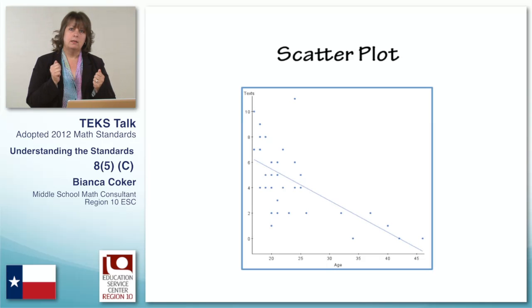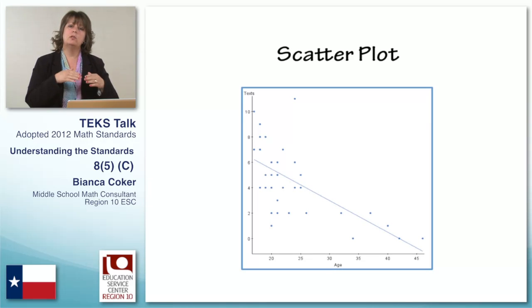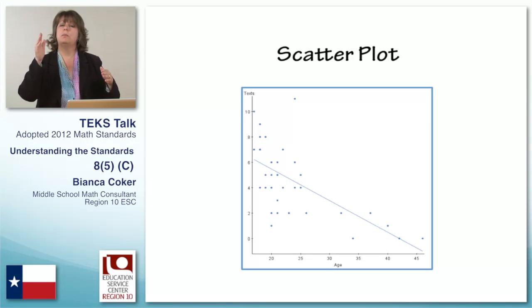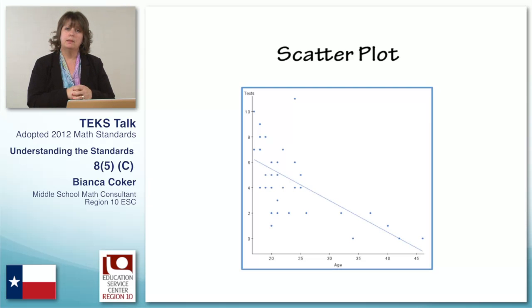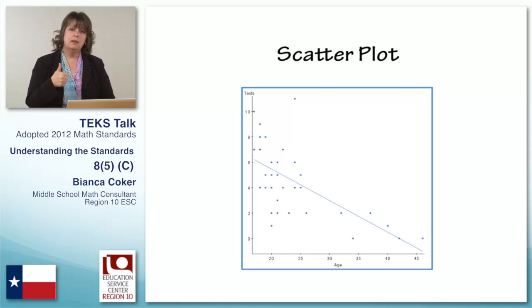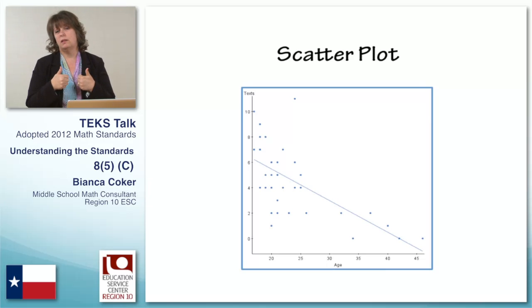In some situations, we might have a positive correlation, and in that case the trend line has a positive slope or is going up. In those cases, as one variable increases, the other variable also increases.